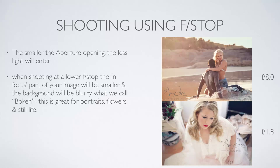The background will be blurry — what we call bokeh — and this is great for portraits, flowers, still life, and those little moments at pre-wedding shoots such as the bridal party getting ready, wedding rings, shoes, clothing, and makeup. For this Hollywood glamour shot I went down to f1.8 on a 50mm lens, just to get the beautiful eyelashes and makeup with only the face in focus.